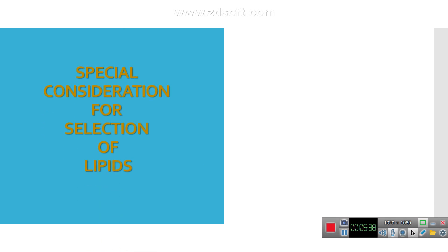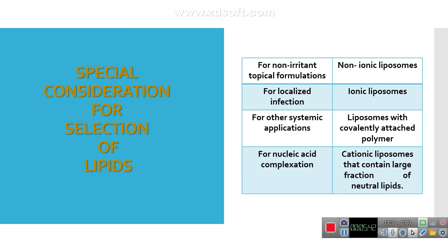There are certain special considerations for the selection of lipids, based upon the intended action of liposomes. For non-irritant topical formulations, non-ionic liposomes are utilized. If liposomes are used for localized infections, ionic liposomes are formulated. For systemic applications, liposomes with covalently attached polymers are made with lipids. And if liposomes are used for nucleic acid complexation, cationic liposomes containing a large fraction of neutral lipids are utilized.